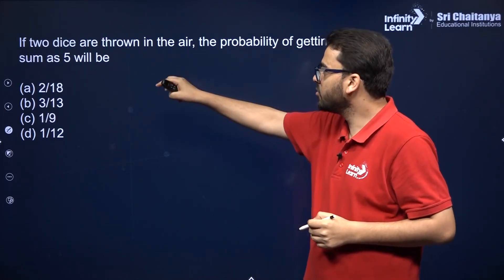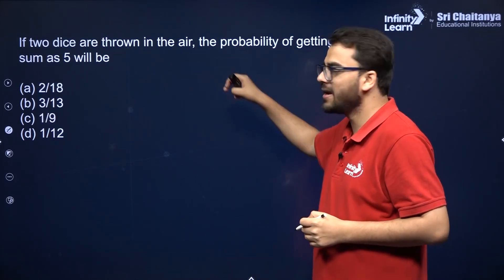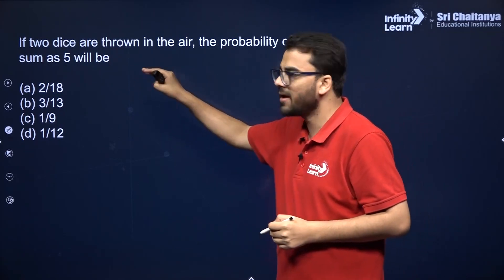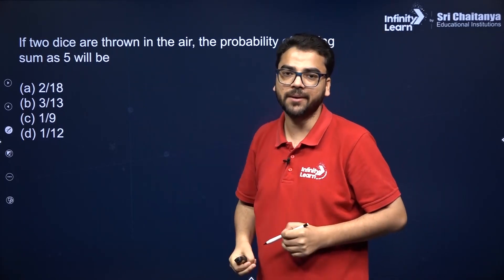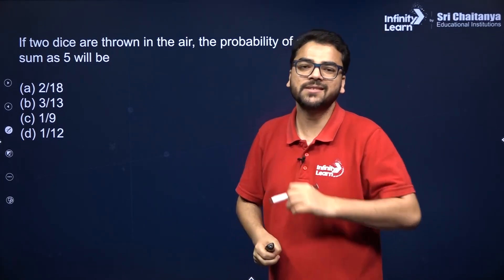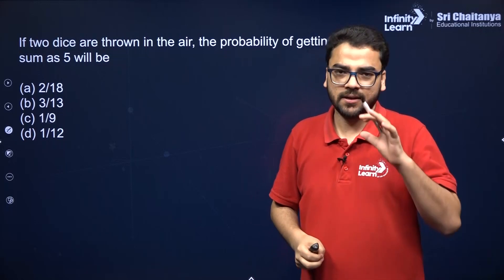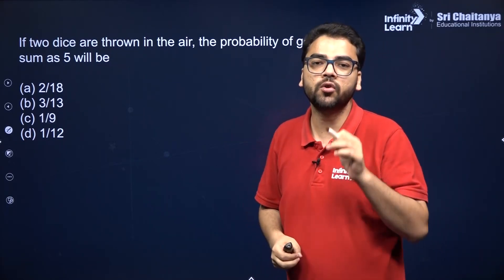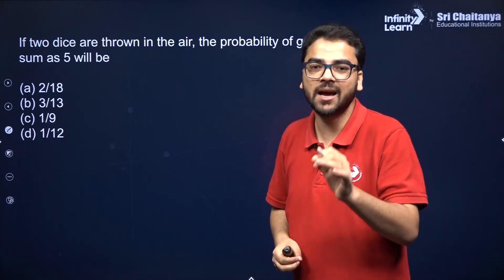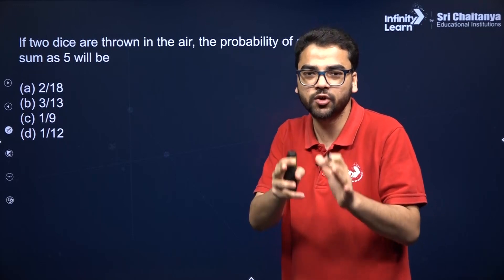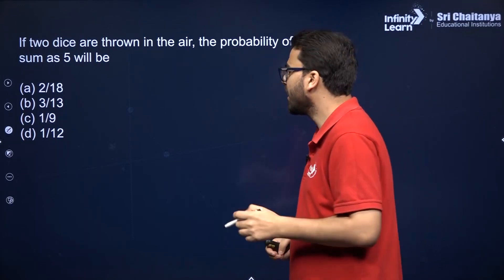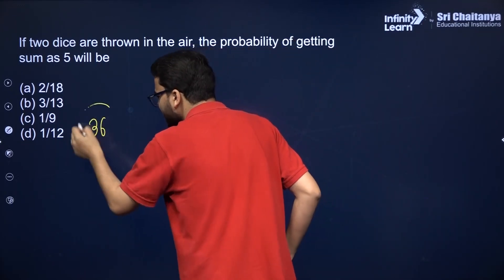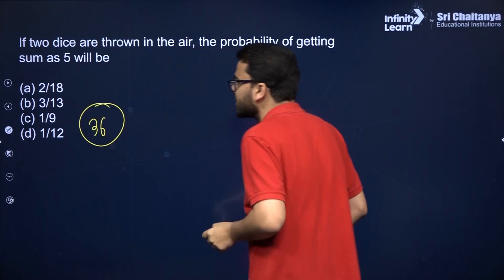If two dice are thrown in the air, the probability of getting a sum as 5 will be what? The number of possible outcomes when you throw two dice simultaneously is 36.